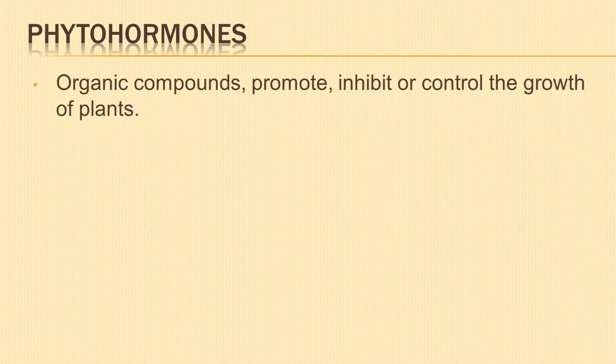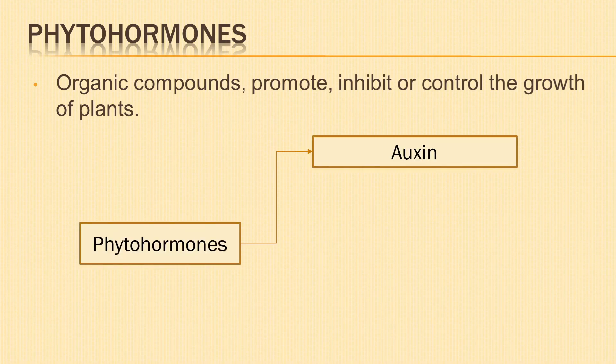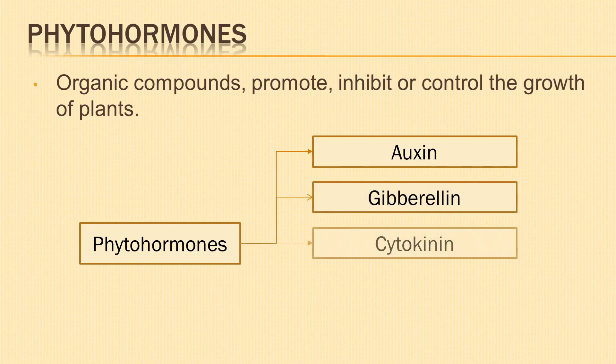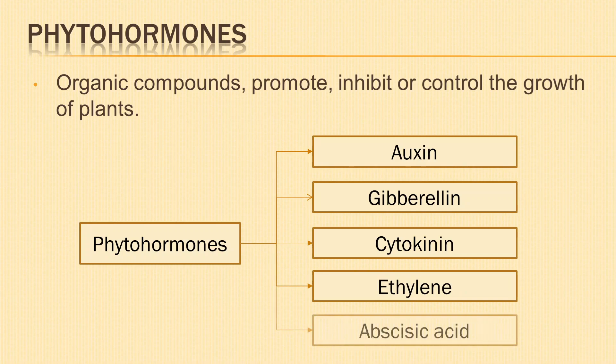We shall now learn about phytohormones, which are plant growth regulators. Phytohormones are organic compounds produced by plants which promote, inhibit or control the growth or influence other physiological functions. The different types of plant growth regulators are auxin, gibberellin, cytokinin, ethylene and abscisic acid.